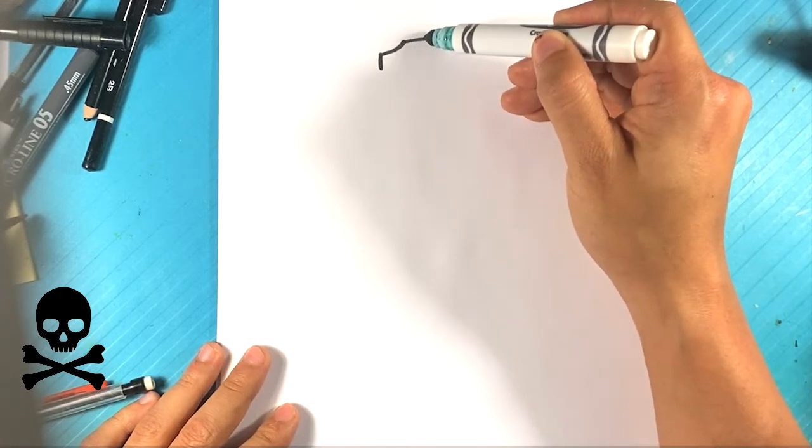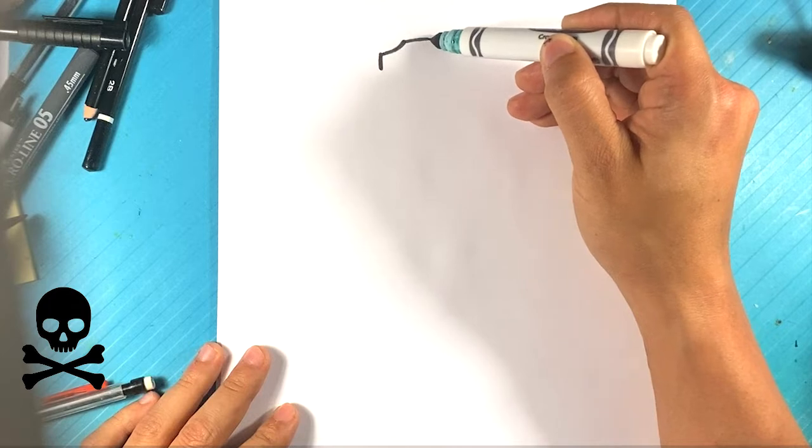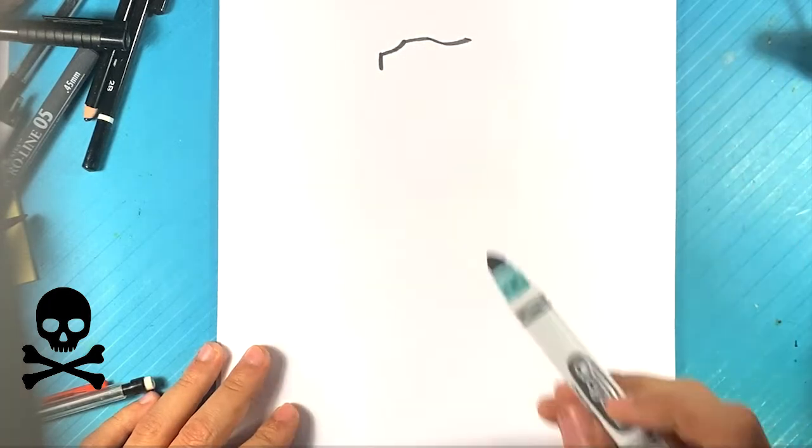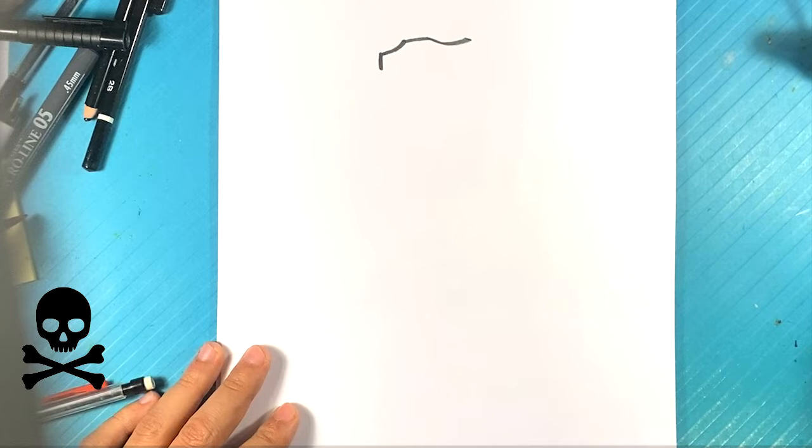I'm going to continue the line back from there, curve one more time. So we have this little bump there, which essentially represents the brow, kind of where the eyes are going to be in that area.